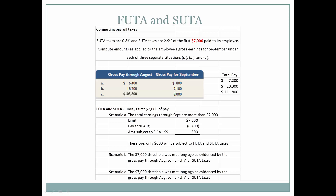For Scenario B, the total pay is $20,300 and gross pay through August alone is $18,200, so the $7,000 threshold was met long ago — no FUTA or SUTA taxes would be computed for September. The same applies to Scenario C: the $7,000 threshold was met long ago as evidenced by the gross pay through August, so no FUTA or SUTA taxes apply.